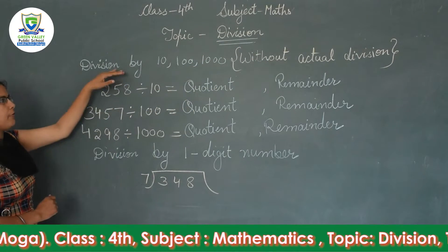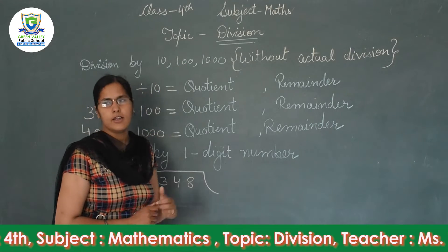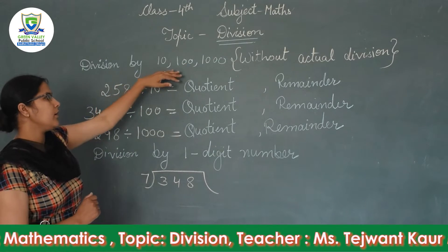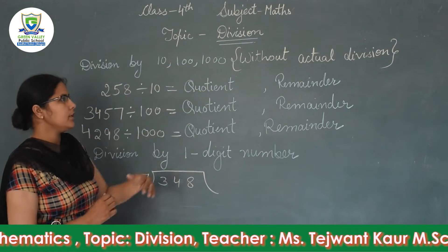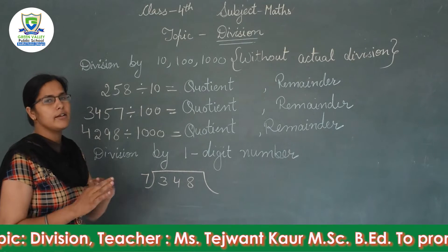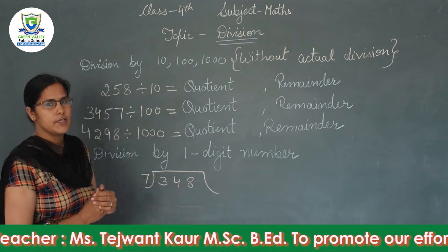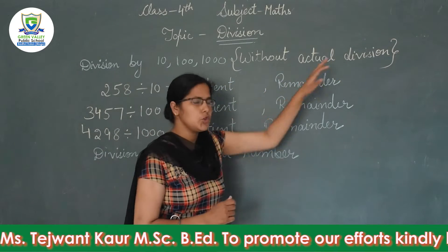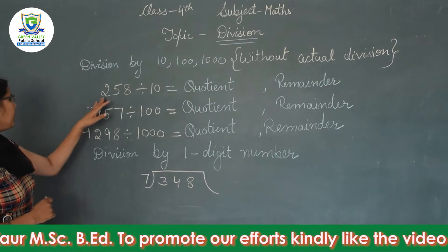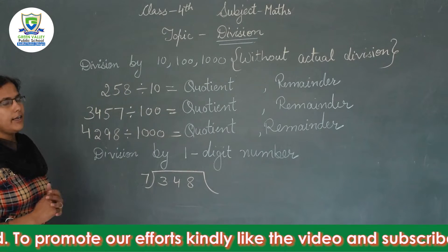Firstly we have division by ten, hundred, and thousand. When we divide by ten, hundred, and thousand, we can give the answer without actual division. For example, we have two hundred and fifty-eight divided by ten.